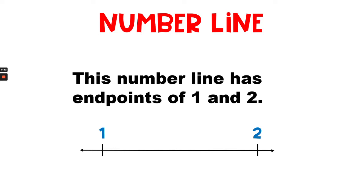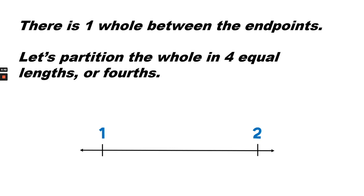This is a number line. This number line has endpoints of 1 and 2. There is one whole between the endpoints. Let's partition the whole into 4 equal lengths, or fourths.